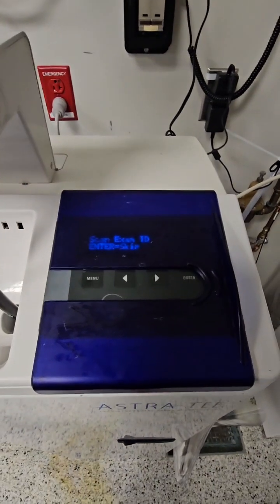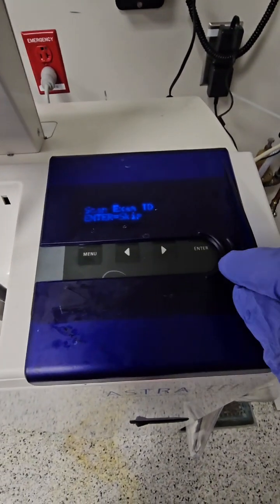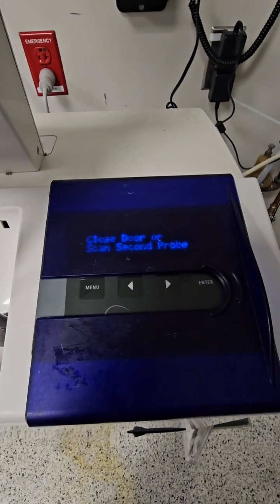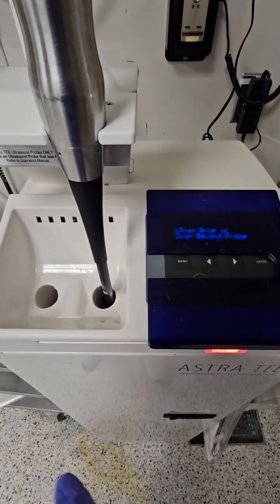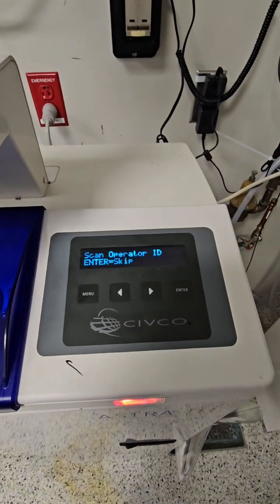The handle is firmly sat on the actual holder there. It asks for patient ID - if patient ID is available you're going to scan that. If it's not, you're going to go ahead and hit enter. It gives you an option of doing a second probe. I do not have a second probe to do at this time, so I'm going to go ahead and close the door.